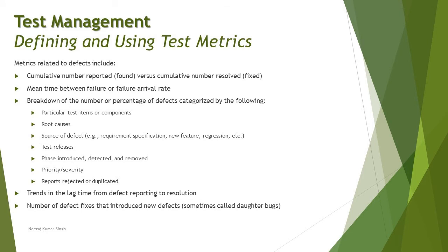Defect categorization includes: particular test item or components (defects specific to each component), root causes, source of defect (where it was initially introduced), test releases (in which release it was found), phase introduced, phase detected and removed, priority and severity, and prior reports rejected or duplicated. All these factors are fields from the defect report and can help measure many things. A defect report alone can tell the entire organization how proficient its processes are and what kind of improvement is needed. Defects are very, very vital to measure.